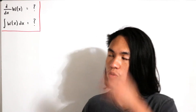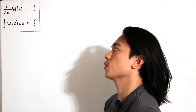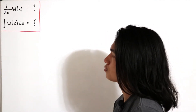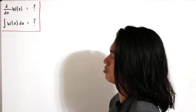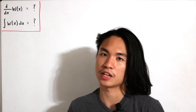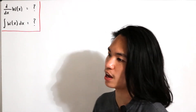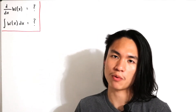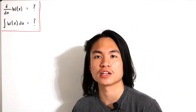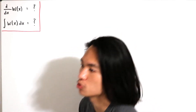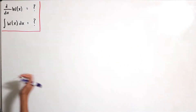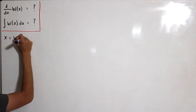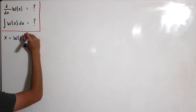Now let's start with the derivative. A common misconception is that W(x) equals x·eˣ — that's not true. Since W(x) is the inverse of x·eˣ, the correct relationship is: x = W(x)·e^(W(x)).